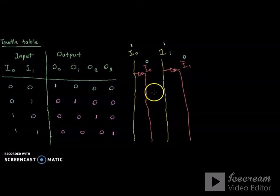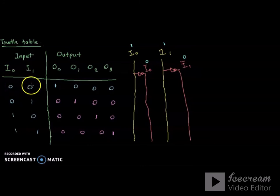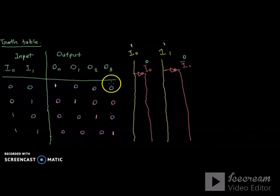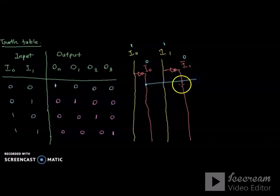Let's do this implementation. Here, I0 is 0 and I1 value is 0 — both values are 0. We use an AND gate, and if we get the output, O0 is the output.